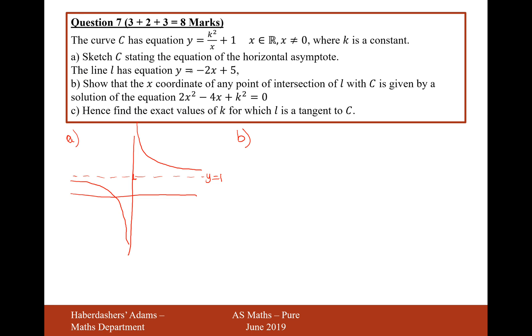The line L has equation y equals minus 2x plus 5. Show that the x coordinate of any point of intersection of L with C is given by the solution to this equation here. So if we're trying to intersect this line here and this line here, then the two equations must be equal to each other.